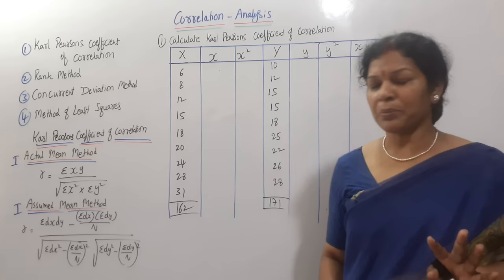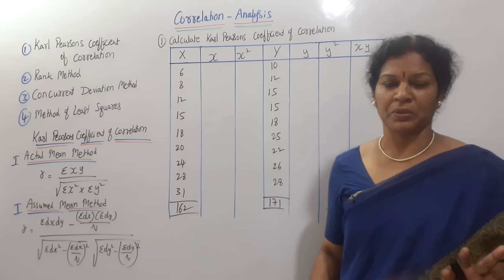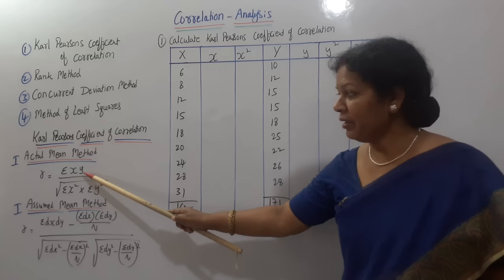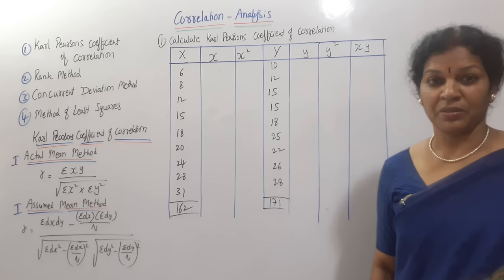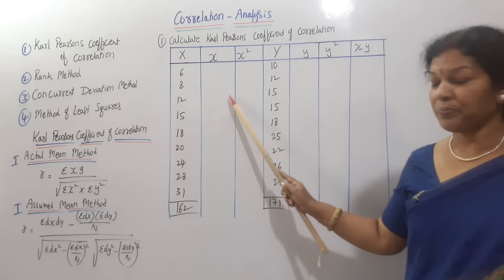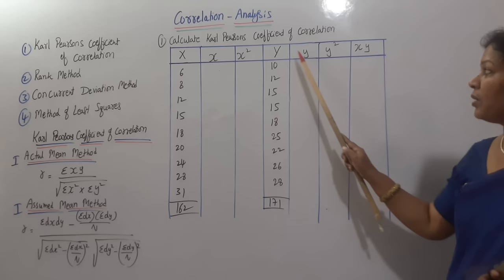Now we will take one problem and see the actual mean method today. As per the formula, we need sigma xy, sigma x-squared, and sigma y-squared. Data is given as X and Y. We need to find: small x, small x-squared, small y, small y-squared, and small x into small y — these are the columns required as per the formula.